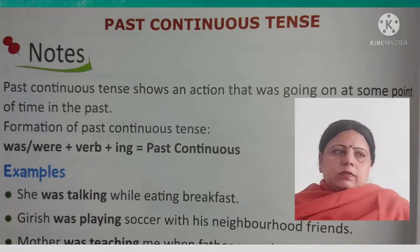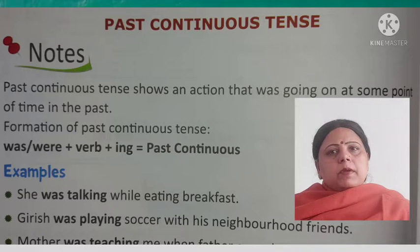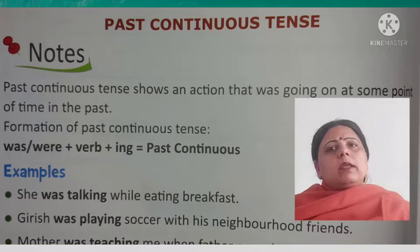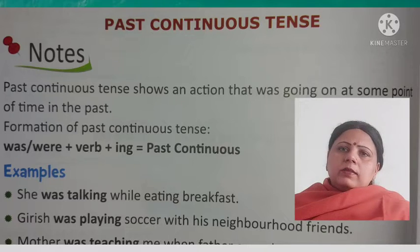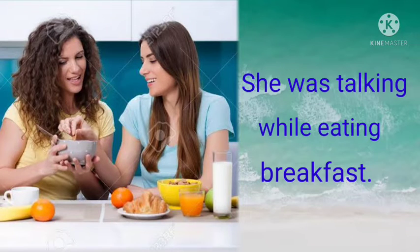Past continuous tense shows an action that was going on at some point of time in the past. Yaani beta, jo past mein action chal raha tha — yaani ab finish ho chuka hai, lekin past mein woh action chal raha tha — continuously the action was going on. For example: she was talking while eating breakfast, yaani woh baatein kar rahi thi past tense mein jab breakfast chal raha tha.